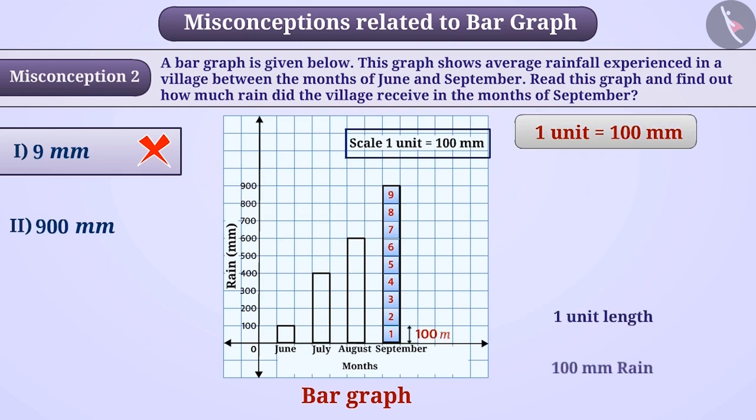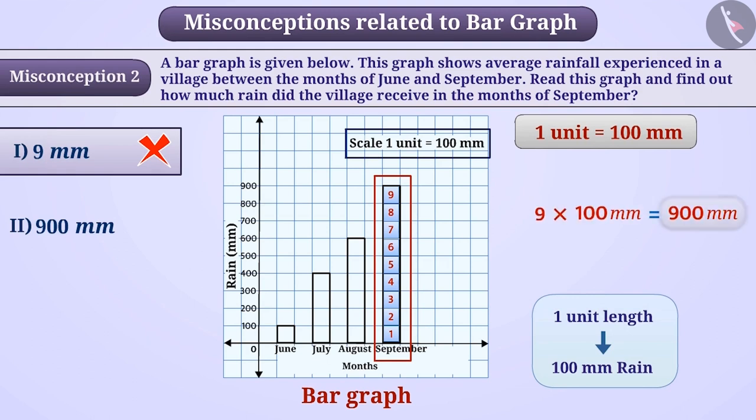The height of the bar for September is 9 units, which means the month of September received 9 multiplied by 100 mm, equal to 900 mm rain. Thus, option 2 is the correct answer.